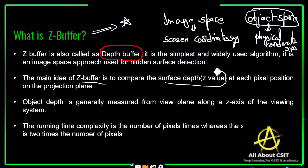The main idea of the Z buffer is to compare the surface depth, the Z value, at each pixel position on the projection plane. Each surface is determined to find the closest visible surface. This is used to overcome the disadvantage of back face detection, where hidden surfaces are not visible.